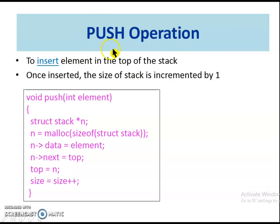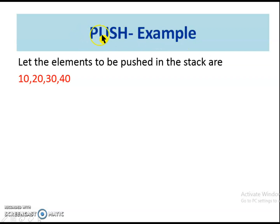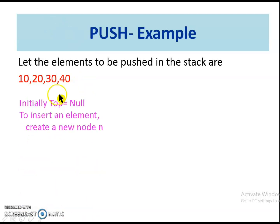Let us see the push operation. The push function is used to insert the element at the top of the stack. To insert an element in the linked stack, create a new node and allocate memory. Set the data with the element to be inserted and make the next pointer point to the top. Then set the new node as the new top. To keep track of the size, the size variable is incremented by 1 when the insertion is done. Let us see the example of how the elements 10, 20, 30, 40 are pushed in the stack. As it is a linked list and initially there is no node, the top is set as null. To insert the element 10, create a new node, set its data as 10 and the next field as null. Let us assume this new node is created at location 2048.